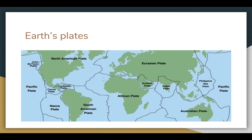Here is a simplified map of the Earth showing all the major plates. You can see the major large ones, like the North American plate and the Eurasian plate, and then some of the smaller ones, like the Caribbean plate.